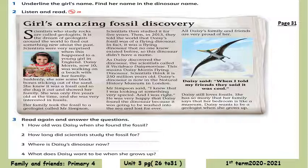Her family took the fossil to a geologist called Mr. Simpson. Scientists then studied it for five years. Then, in 2013, they told the world that Daisy's fossil was of a flying dinosaur. In fact, it was a flying dinosaur that no one knew existed before — so this dinosaur didn't have a name. As Daisy discovered the dinosaur, the scientists called it Vectid Draco Daisy Morrisii, which means Daisy Morris Flying Dinosaur. Scientists think it is 250 million years old.